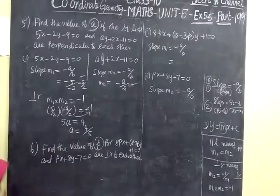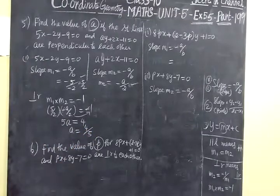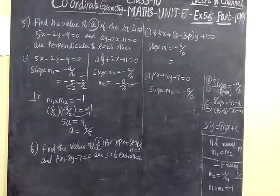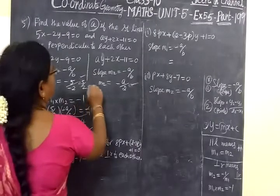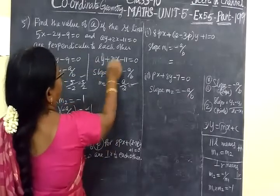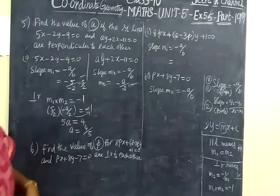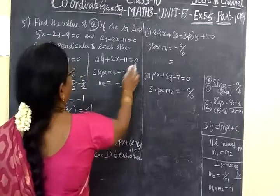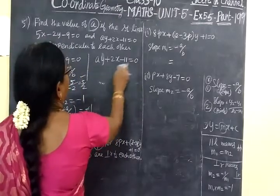Now we check the answer for the fifth question. Here it is given 5, here 5 by 2, this one correct. Here minus 2 by A, this one correct. Here 2 by A. Oh, there's a mistake here. So we should be careful with the equation.